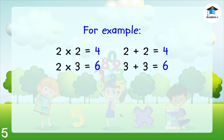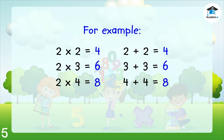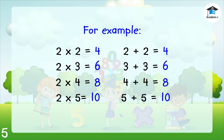Next example: 2 times 4 equals 8. Let's add 4 by itself: 4 plus 4 equals 8. Last example: 2 times 5 equals 10. Let's add 5 by itself: 5 plus 5 equals 10.